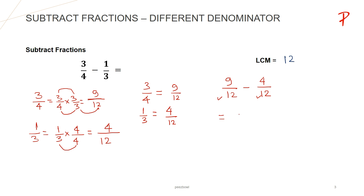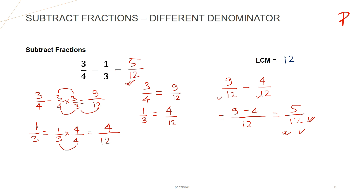In order to subtract these two fractions, because we have a common denominator, I will write 12 at the denominator's place. And for the numerator, I will subtract both the numerators — that is 9 minus 4, which is 5. So the answer is 5 upon 12. This fraction is already in simplified form because the numerator is smaller than the denominator, making it a proper fraction. So 3 upon 4 minus 1 upon 3 is 5 upon 12. This is how we subtracted two fractions using LCM.